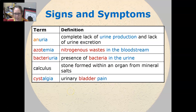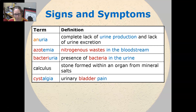Anuria is a complete lack of urine production and lack of urine excretion. Azotemia is nitrogenous waste in the bloodstream. Bacteriuria is a presence of bacteria in the urine.